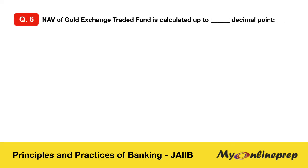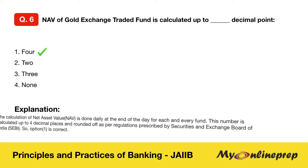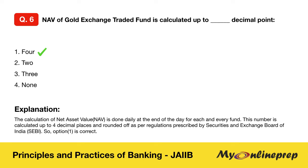Question 6: NAV of a gold exchange traded fund is calculated up to how many decimal points? Options: four, two, three, or none. Correct — option one is the answer: four decimal points. The Net Asset Value (NAV) is calculated daily at the end of the day for each fund. This number is calculated up to four decimal places and rounded off as per regulations prescribed by SEBI.